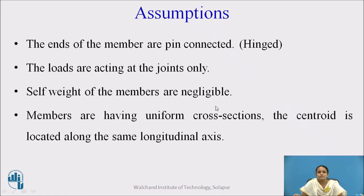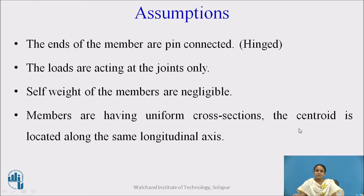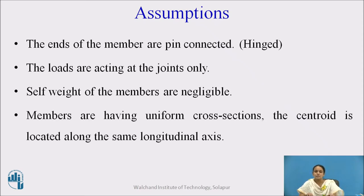Members are having uniform cross-sections, and the centroid is located along the longitudinal axis. In the frame, the members which are having uniform cross-section, the centroid of those sections are located along the same longitudinal section. These are the common assumptions considered in the analysis of frames.